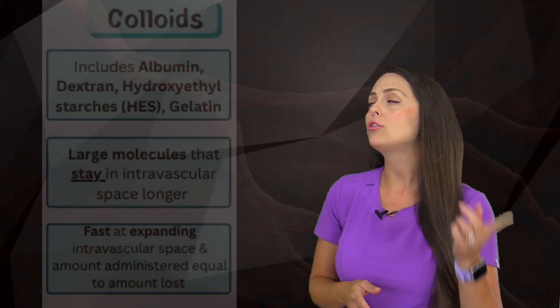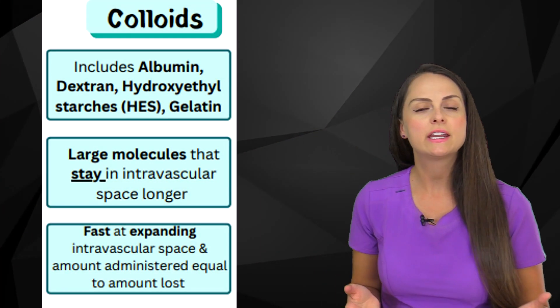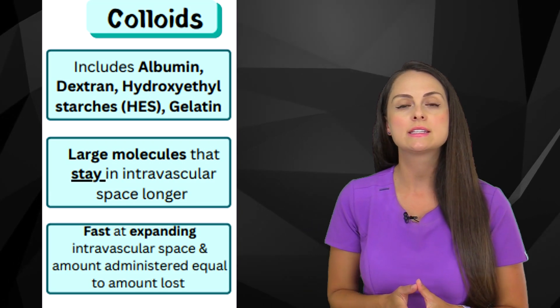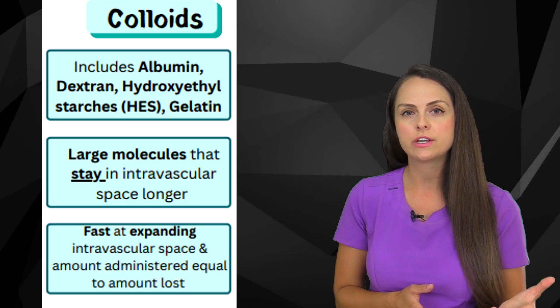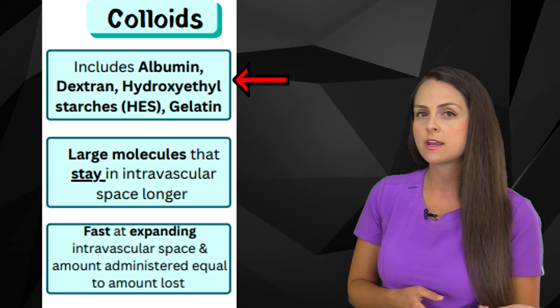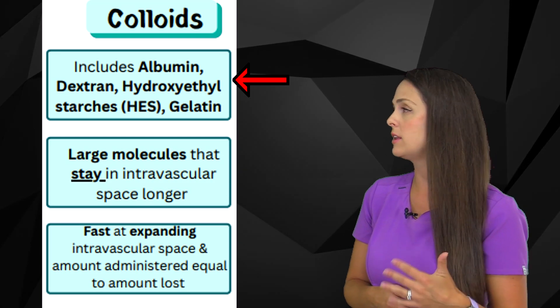So first let's take a look at colloid solutions. These solutions can include natural and synthetic type solutions. For instance, a natural type of colloid is known as albumin, whereas we can have synthetic types which include dextran, hydroxyethyl starches, and gelatin.